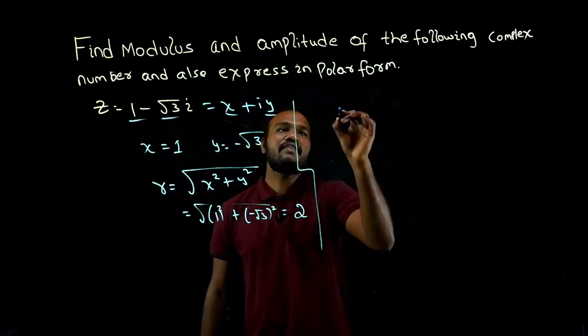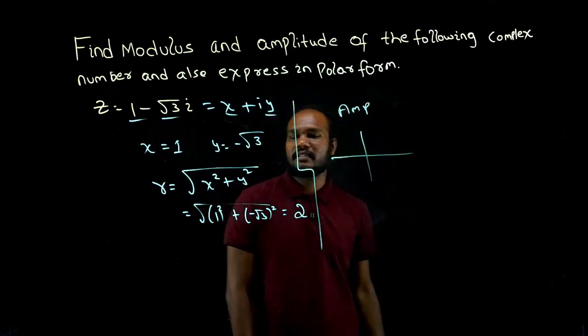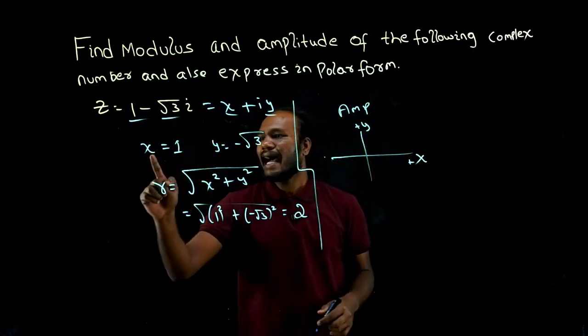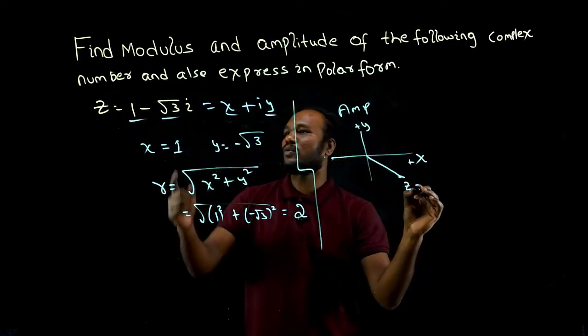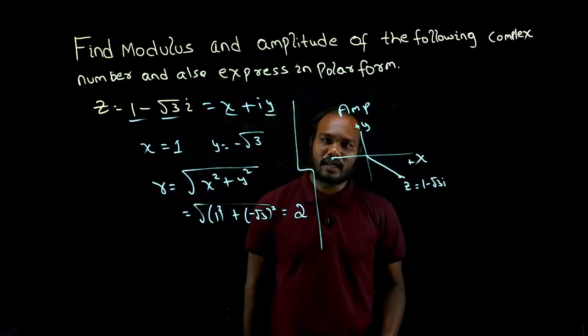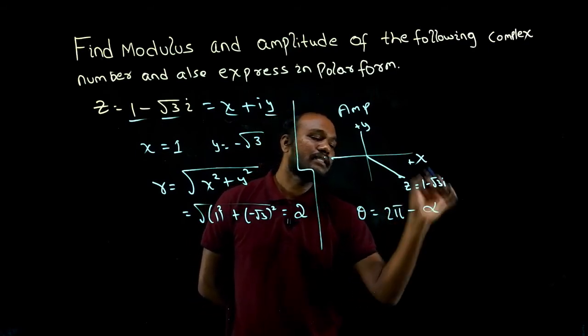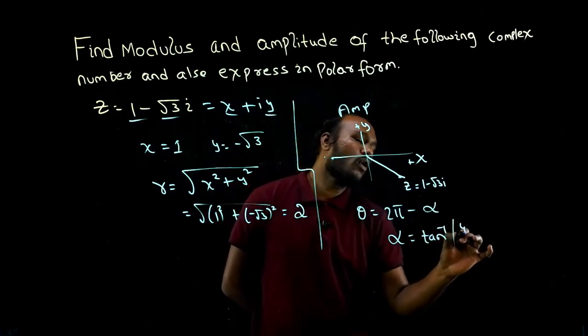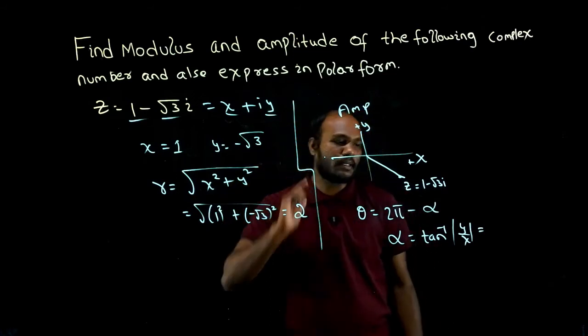Next we need amplitude. First we have to decide the quadrant. This is x positive, this is y positive, this is x negative, y negative. We have x positive y negative, which is the fourth quadrant. For the fourth quadrant, theta is 2π minus alpha. What is alpha?